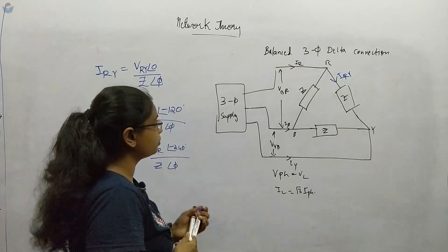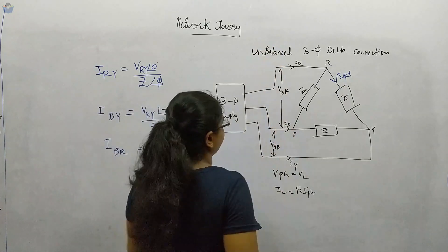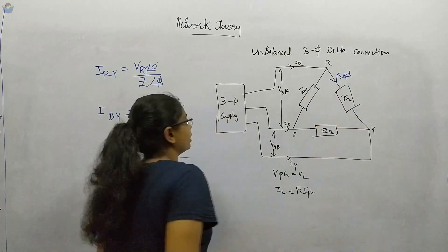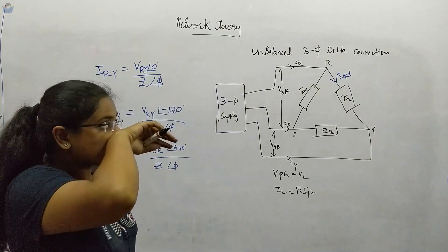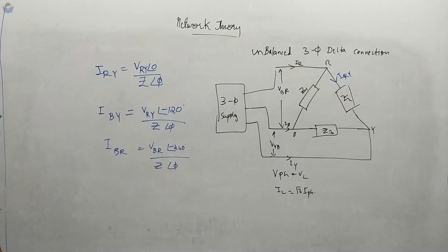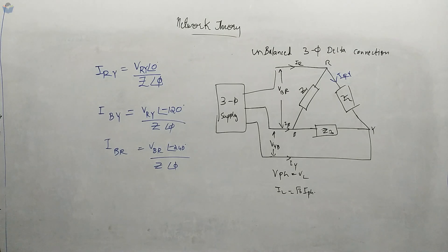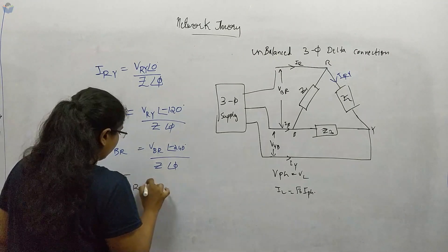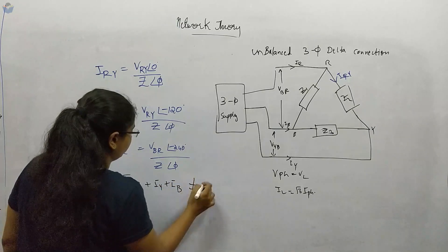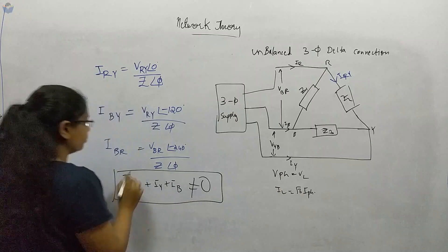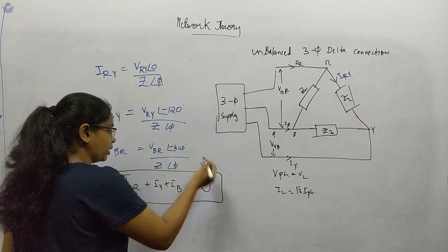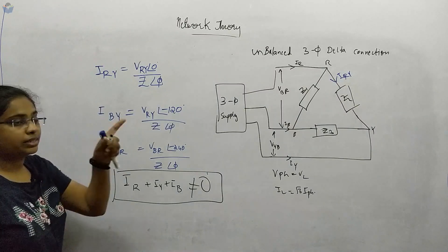Next, for the unbalanced three-phase delta connection, the impedances are Z1, Z2, and Z3. The key difference is that IR plus IY plus IB, the line currents, will not be equal to zero. The formulas remain the same; only this sum is no longer zero.